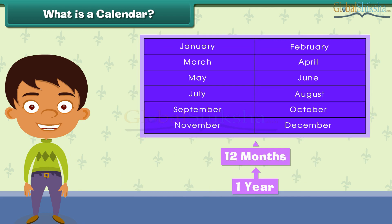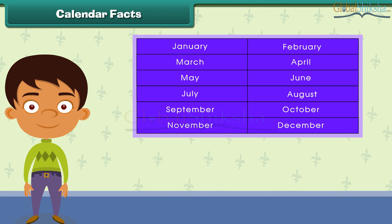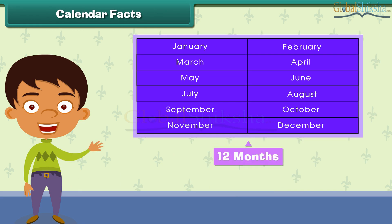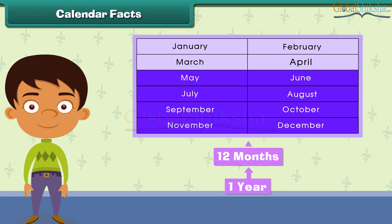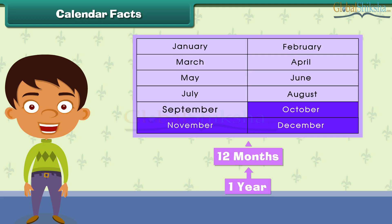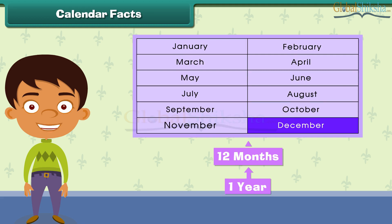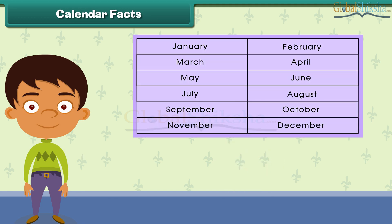Calendar facts. There are 12 months in a year. The months are January, February, March, April, May, June, July, August, September, October, November, and December. When all the days are counted in a year, it sums up to be 365 days.